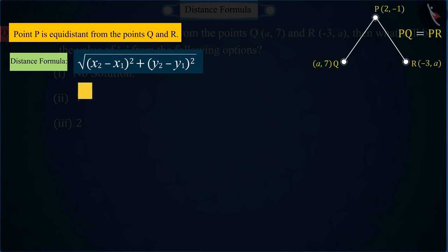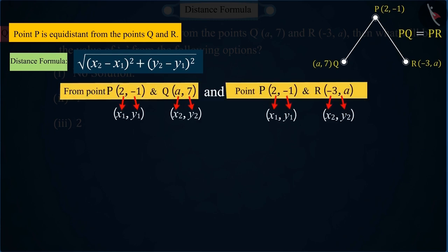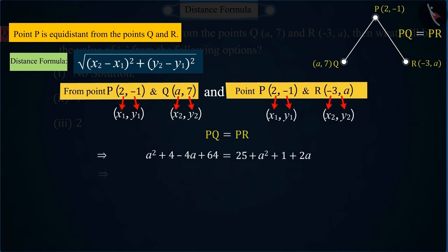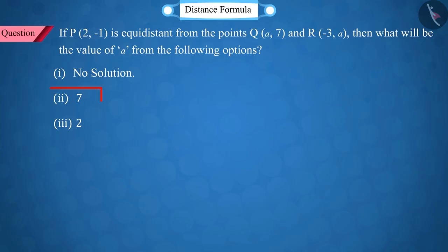Using the points P and Q in the distance formula and by keeping the values of points P and R, we get a value of A is equal to 7. That is, option 2 is the correct answer.